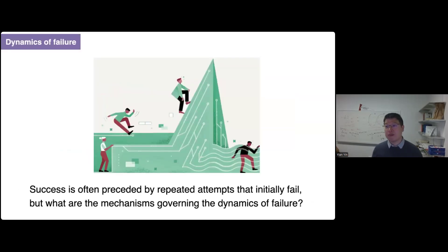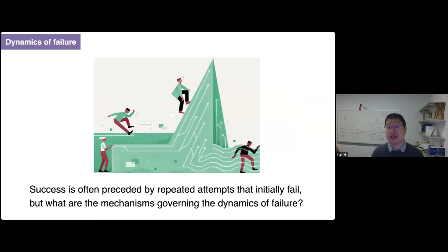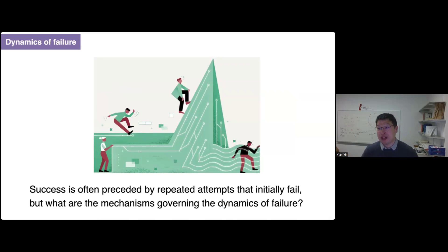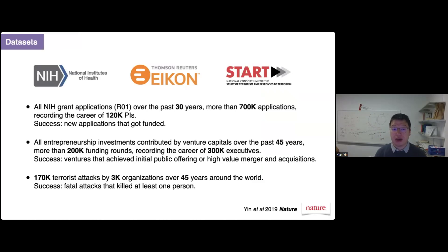We think about a very simple yet previously unknown question. We all know success is often preceded by repeated attempts that initially fail — you don't get to success on your first attempt in many cases. But what exactly are the mechanisms governing the dynamics of failure? This turns out to be a question that is much harder to answer when we really dive into it. Part of the reason is most existing data, such as papers, patents, or products, always have a survivorship bias — you are looking at papers that already got published, patents that already got approved, or products that already went viral. So we spent almost two years collecting three large-scale datasets across science, business, and radical social movements that have unbiased coverage of both successful and failed attempts.